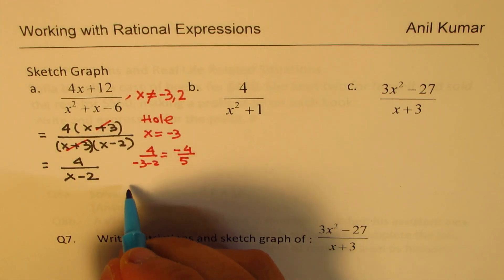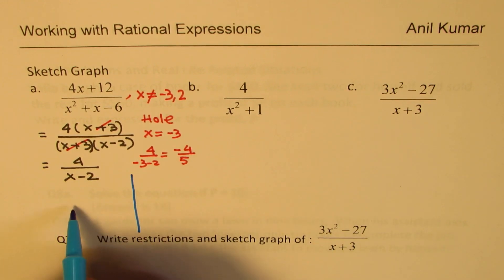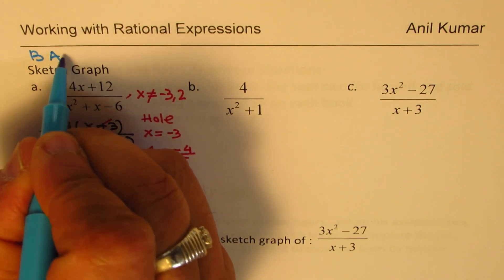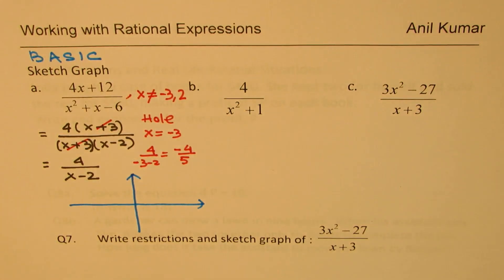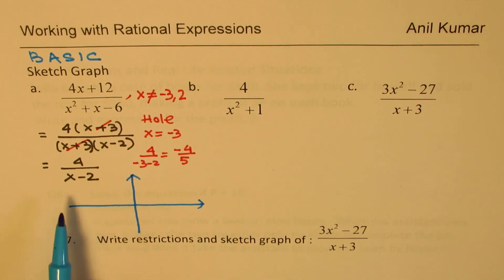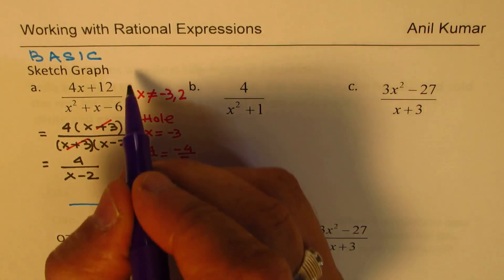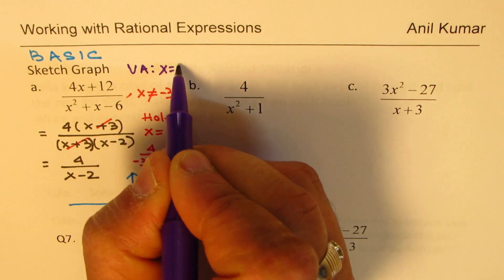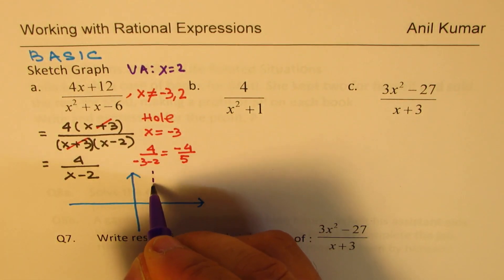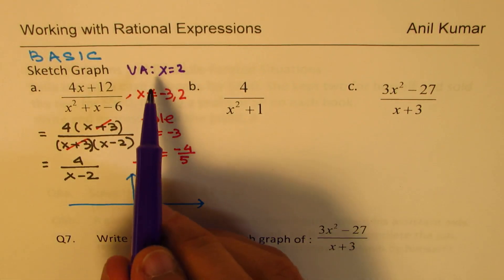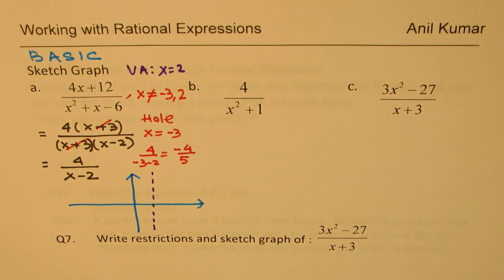Now let's see how to sketch it. I'm not going into major details here — there is a lot to learn from the basics, so I'll label this 'basic' and provide links for sketching rational expressions in more depth. We have a vertical asymptote at x = 2, meaning x = 2 is not in our domain. So the domain is all real numbers except x = 2.